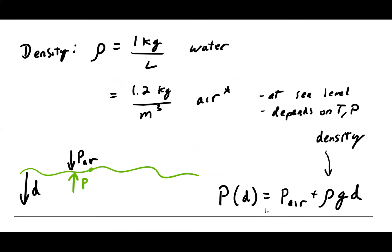Density is an important quantity for fluids. Our standard for density is water, which is one kilogram per liter. For air, it gets a little fuzzy — air is compressible, so it can have different densities. At standard temperature and pressure at sea level, the density of air we use is 1.2 kilograms per cubic meter.